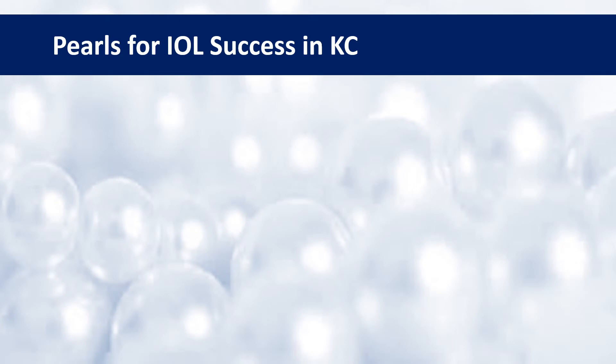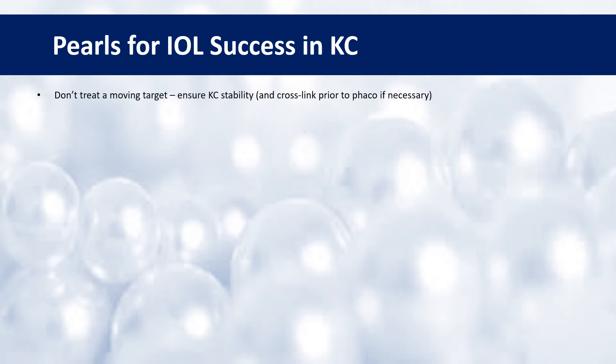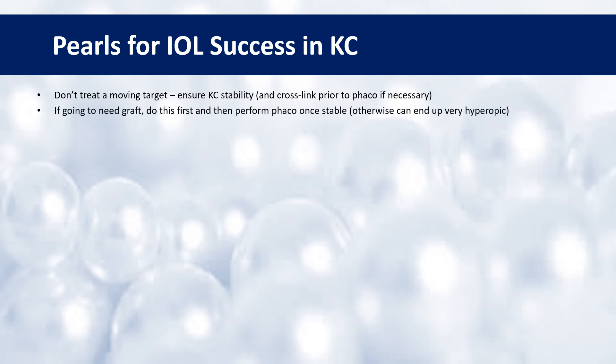Here are just a few general pearls for IOL success in keratoconus. Firstly, don't treat a moving target — ensure that the keratoconus is stable and cross-link them prior to phaco if necessary. If they're going to need a graft, then do this first and then perform the phaco once stable if you possibly can. Otherwise, they're likely to end up very hyperopic afterwards.